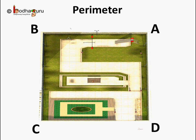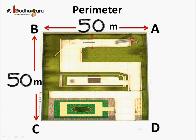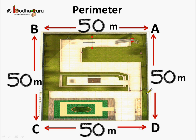So what is perimeter here? The total distance around a figure is called the perimeter of that figure. So 50 meters plus 50 meters plus 50 meters plus 50 meters is the perimeter of this garden.